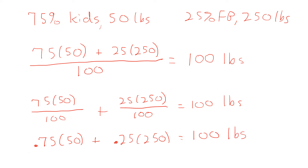The numbers 0.75 and 0.25 are the decimal equivalents of our percentages — 75% is the same as 0.75, and 25% is the same as 0.25. Normally what we do in calculating average atomic mass is we take the percent abundance, write it as a decimal, multiply it by the mass of each isotope, and then add that up for all of the isotopes.